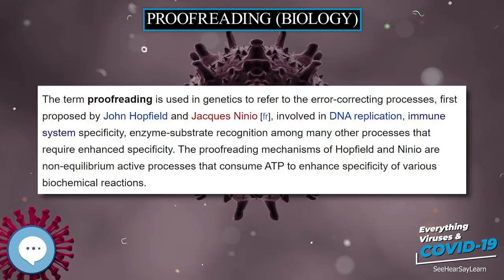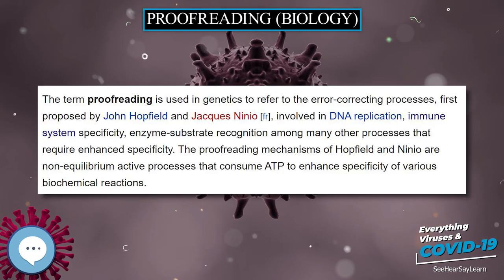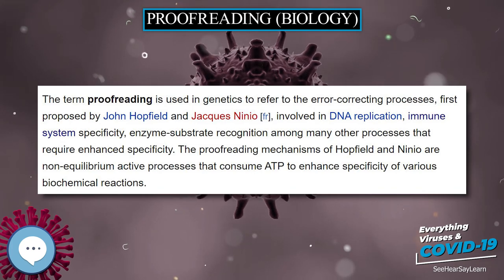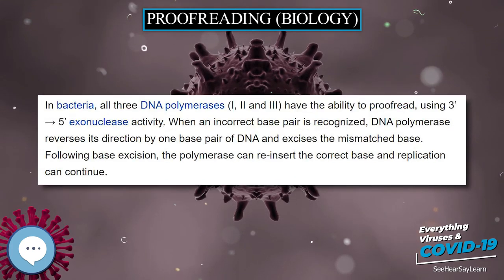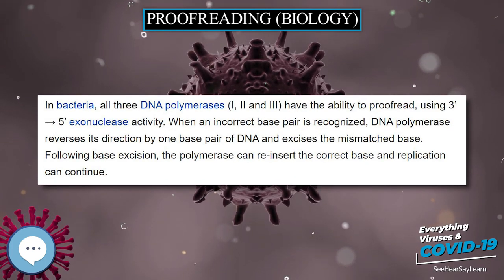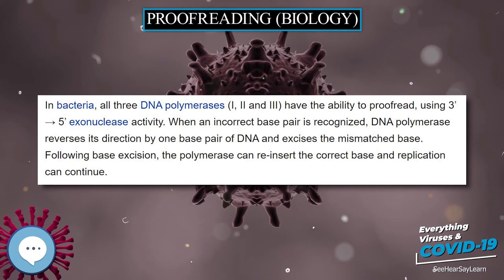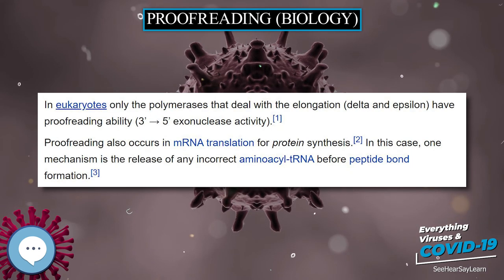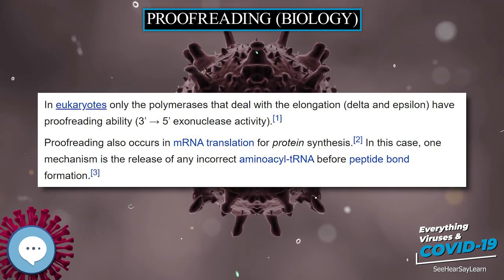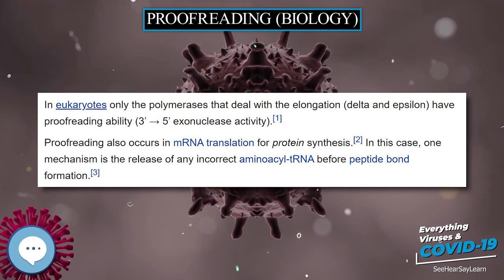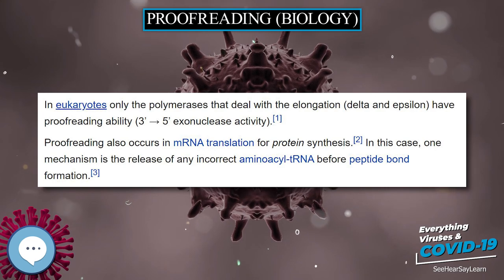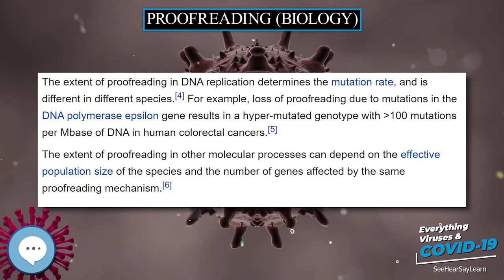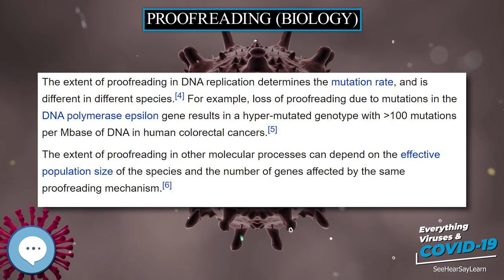The extent of proofreading in DNA replication determines the mutation rate, and is different in different species. For example, loss of proofreading due to mutations in the DNA polymerase epsilon gene results in a hypermutated genotype with greater than 100 mutations per base of DNA in human colorectal cancers.